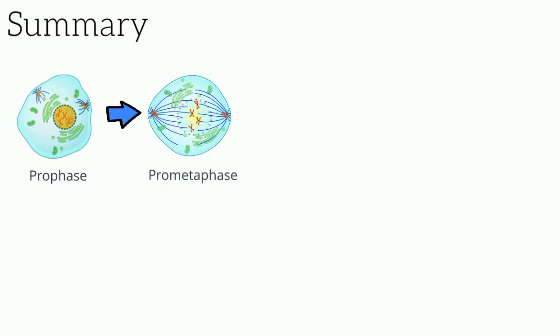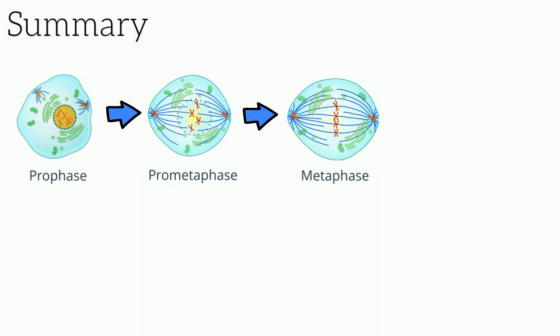To summarize the stages of mitosis: we begin with prophase, in which chromatin condenses into chromosomes and the mitotic spindle begins to form. This is followed by prometaphase, in which microtubules attach to sister chromatids at the kinetochore. This is followed by metaphase, during which sister chromatids align along the metaphase plate, which is followed by anaphase.